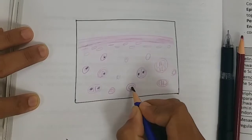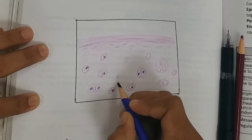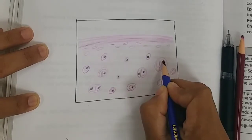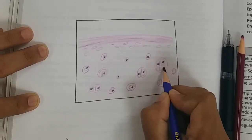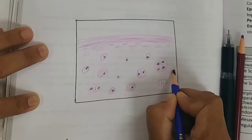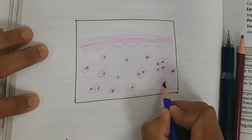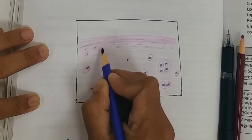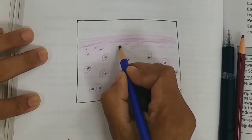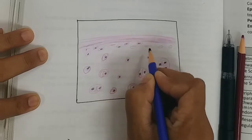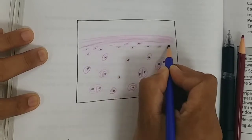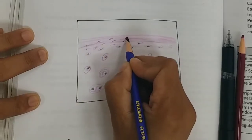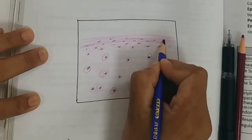The perichondrium is a dense irregular connective tissue found on the free surface of hyaline cartilage. It is rich in fibers, fibroblasts, and blood vessels. Since hyaline cartilage is avascular in nature, it receives its nutrition from the perichondrium by diffusion.